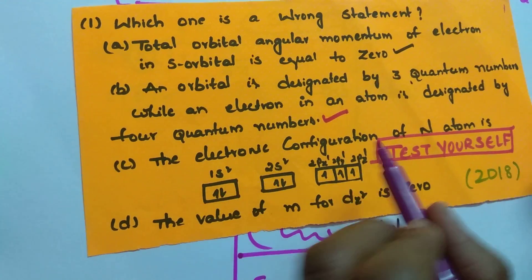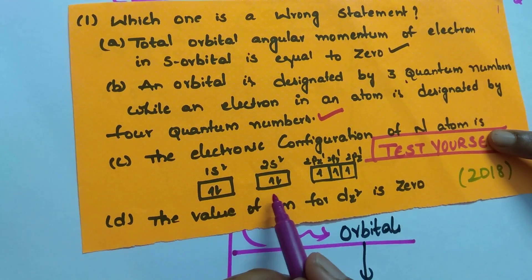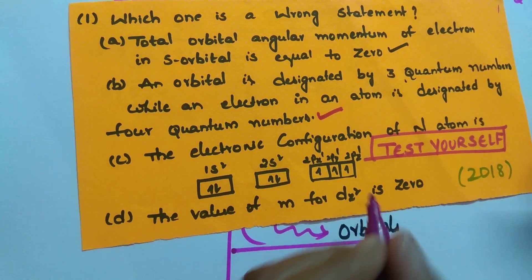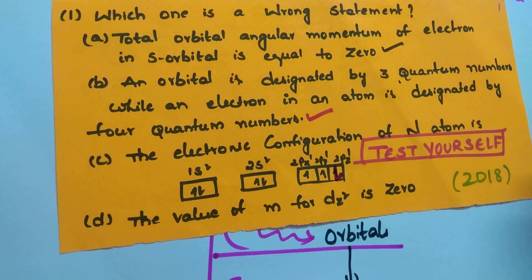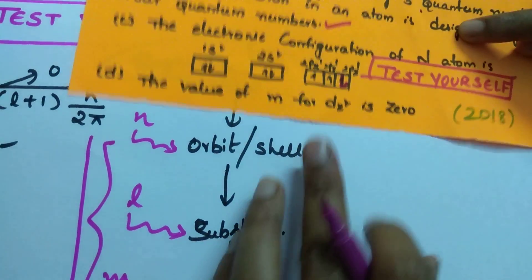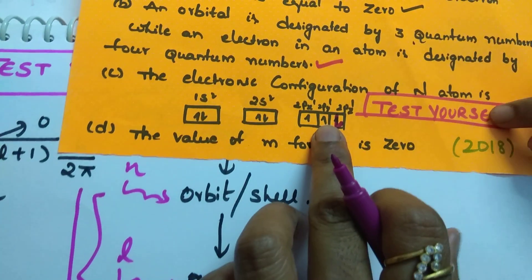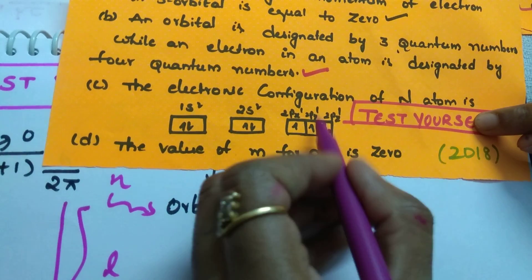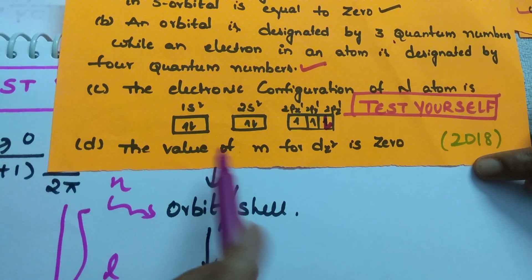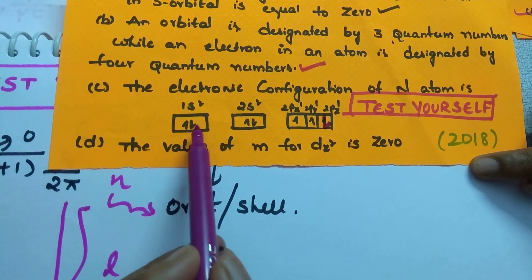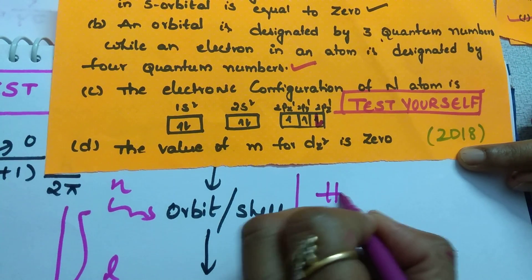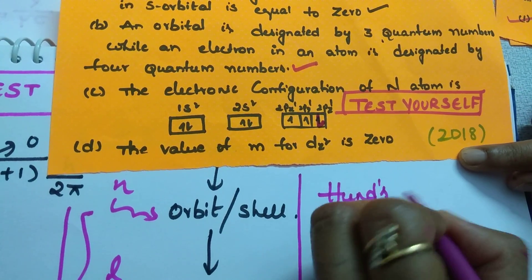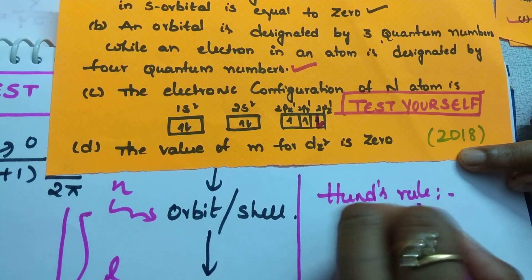And coming to the electronic configuration of nitrogen in this atom. See, I gave all statements correct. This is ultra. Clear? Yes. See, here the electronic configuration. This is a real question. Okay? This electron spin is in downward direction. And here, see, as per Hund's rule. We say that according to Hund's rule.